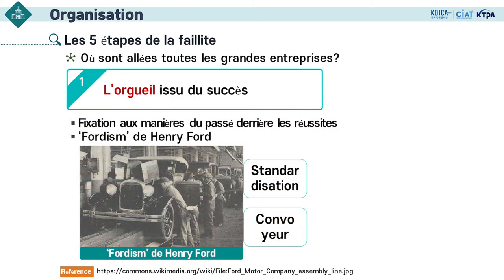Il y a beaucoup de cas de succès. Mais quand on pose la question « Où sont allées toutes les grandes entreprises ? », on peut répondre en définissant la faillite en cinq étapes. La première étape : l'orgueil issu du succès — on pense « Je mérite un succès » et on persiste excessivement dans une méthode de succès du passé. On peut prendre le Fordisme comme exemple : c'est un mot représentant la production de masse — le modèle T chez Ford avait connu un chiffre d'affaires considérable.